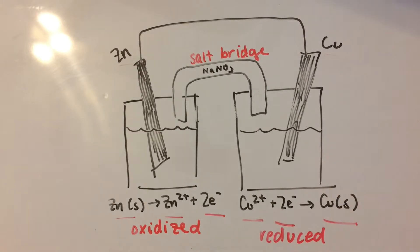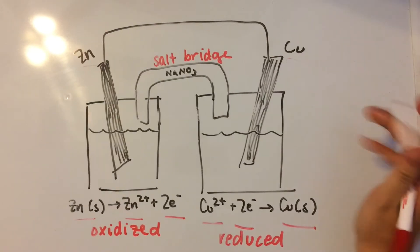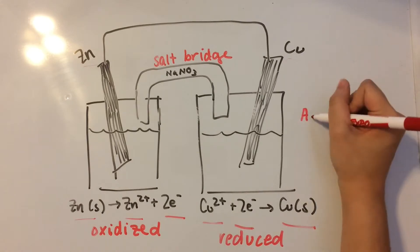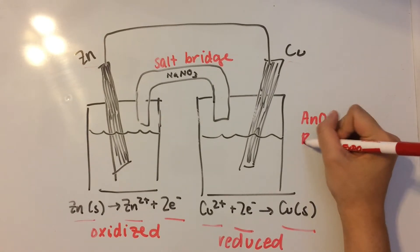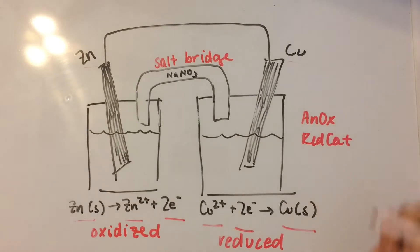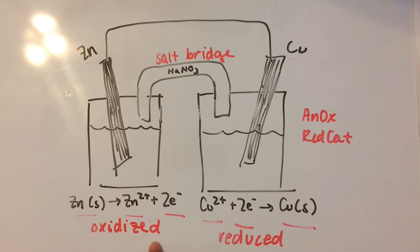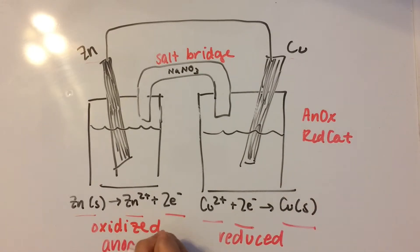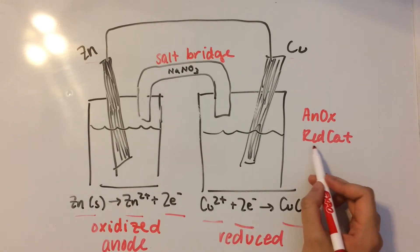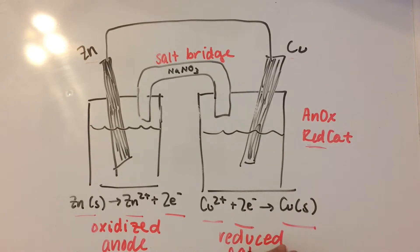Now, we need to remember this little trick to remember what each thing is. AnOx RedCat. So, AnOx tells us that oxidation occurs at the anode. So, this will be the anode. And RedCat tells us that reduction takes place at the cathode. So cathode is over here.